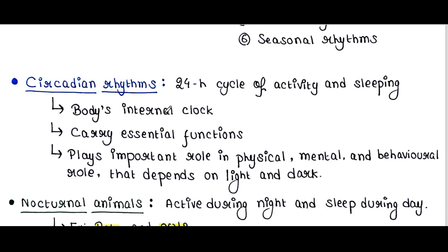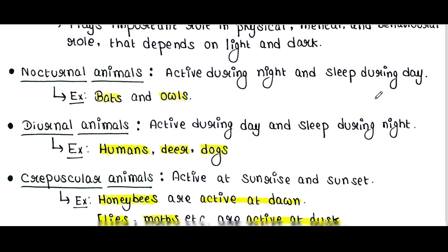Circadian rhythms run to carry out essential functions and control our metabolism. They play an important role in physical, mental, and behavioral processes that depend on light and dark. Hence we are active in light and sleep at night. Based on circadian rhythms, animals can be classified as nocturnal, diurnal, and crepuscular.